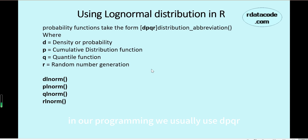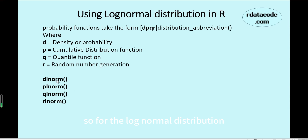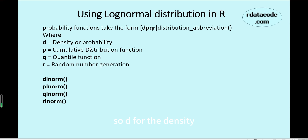In R programming we typically use one of four prefixes — d, p, q, r — combined with a distribution abbreviation. For the log-normal distribution the four functions are dlnorm, plnorm, qlnorm, and rlnorm. Here d is for density, p is for cumulative probability.